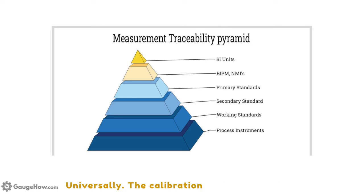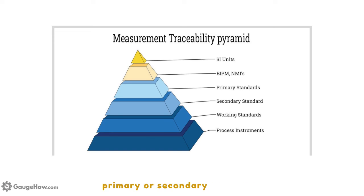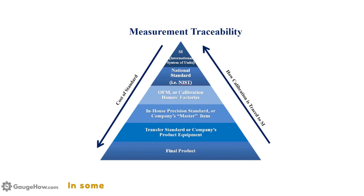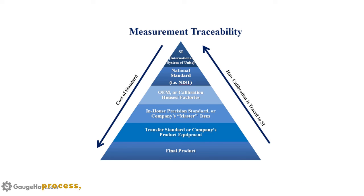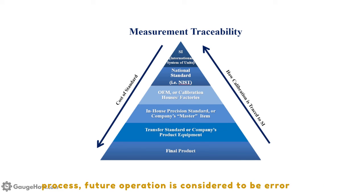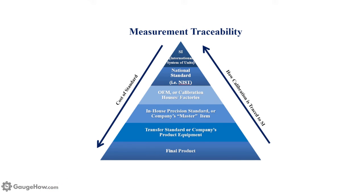The calibration procedure involves comparison of the instrument against primary or secondary standards. In some cases, it may be sufficient to calibrate a device against another one with a known accuracy. After the calibration of a device or a process, future operation is considered to be error-bound for a given period of time under similar operational conditions.